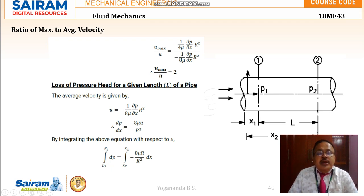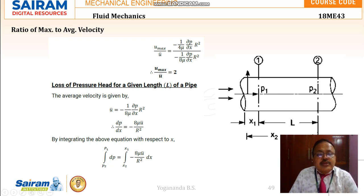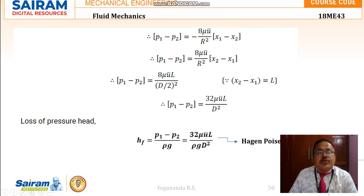Now for the loss of pressure head over a given length of pipe: with two sections 1 and 2, and knowing average velocity u_bar, we have del P / del X. Rearranging and integrating from p2 to p1 on the left and x2 to x1 on the right, we obtain the loss of pressure head Hf. This is Hagen-Poiseuille's equation. Thank you.